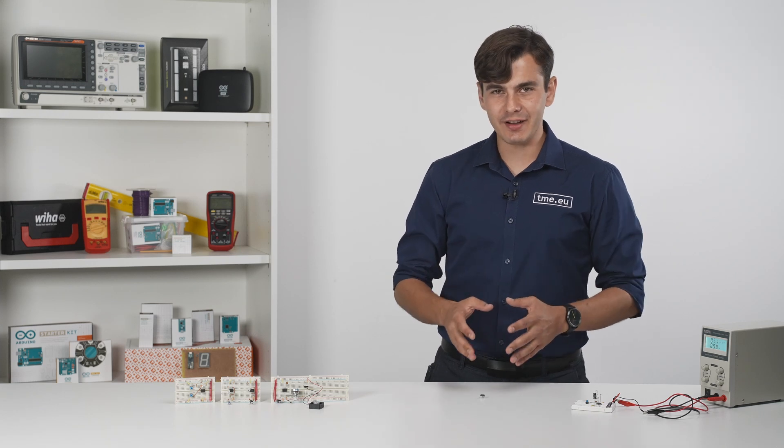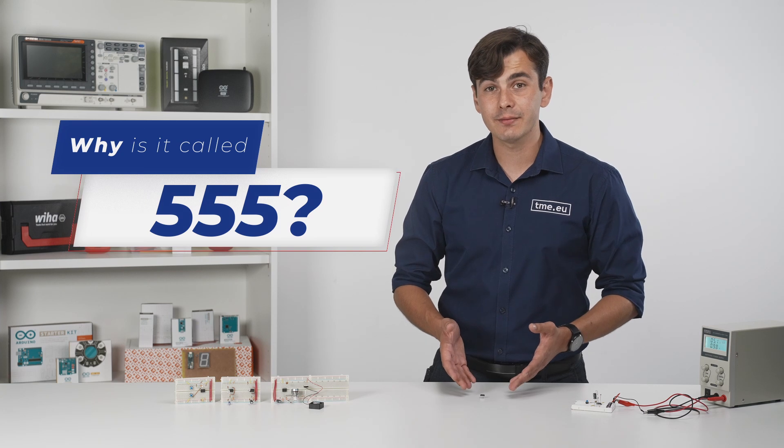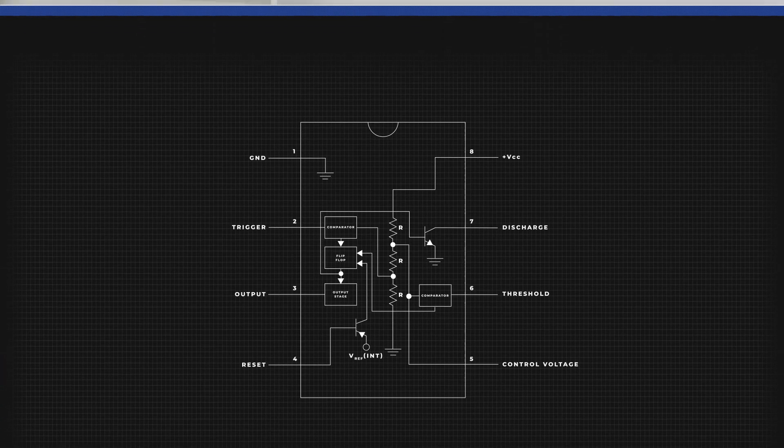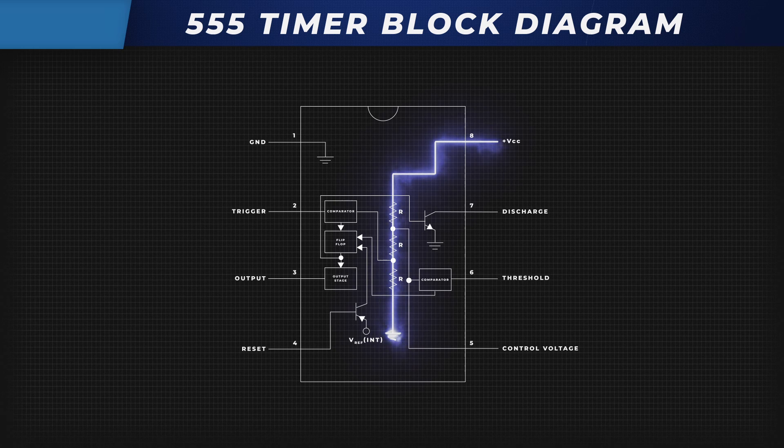Now, when I first encountered the 555, I was thinking, why is this called 555? And to answer this, we need to dive into the internal block diagram. Everything starts with these three resistors between ground and VCC. Together, they form a voltage divider that creates reference voltages for the analog operators. And they are 5 kOhm each. And that's where the name comes from.